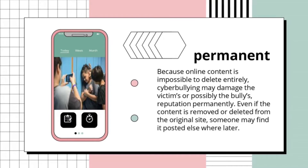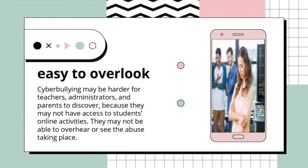Number four: permanent. Because online content is impossible to delete entirely, cyberbullying may damage the victim's or possibly the bully's reputation permanently. Even if the content is removed or deleted from the original site, someone may find it posted elsewhere later. Cyberbullying may also be harder for teachers, administrators, and parents to discover because they may not have access to students' online activities, and unless someone comes forward, they may never know that bullying is taking place.